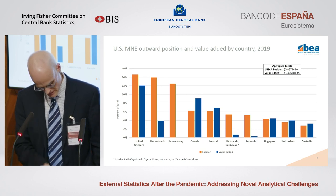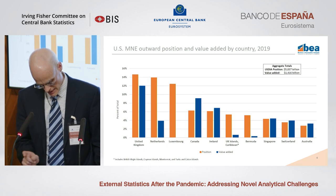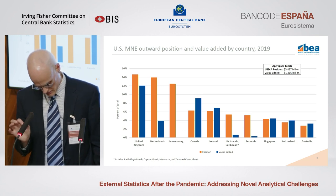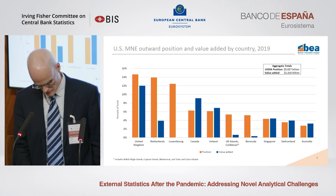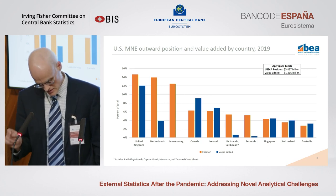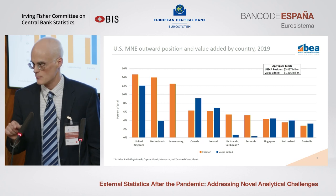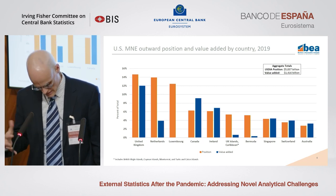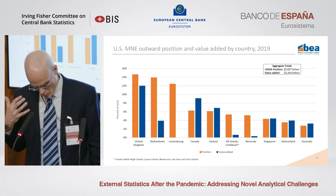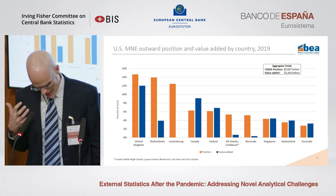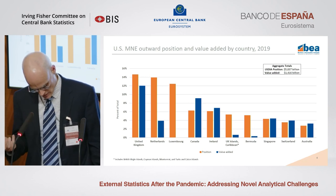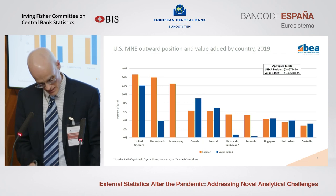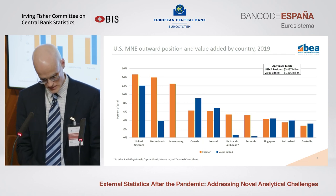In contrast, Canada, Ireland, Switzerland, and Australia all have higher value-added percentages than position, indicating that investments are being routed through affiliates in other countries before ending up there. Ultimately, this research is trying to find out where the position is actually invested, since we know much of it is not staying in the countries that it immediately goes to.